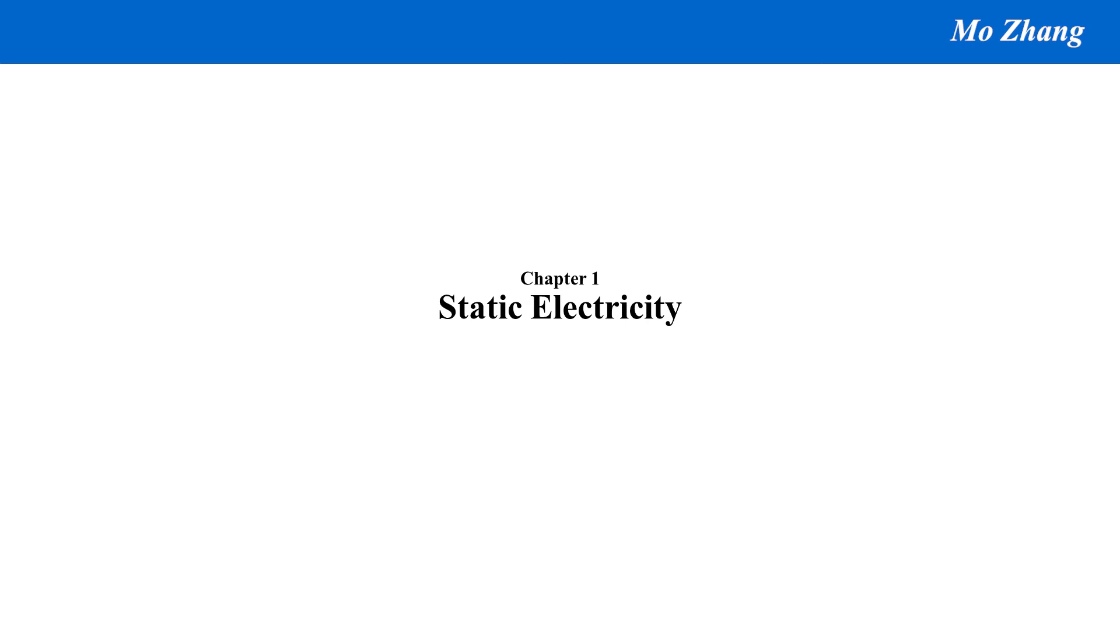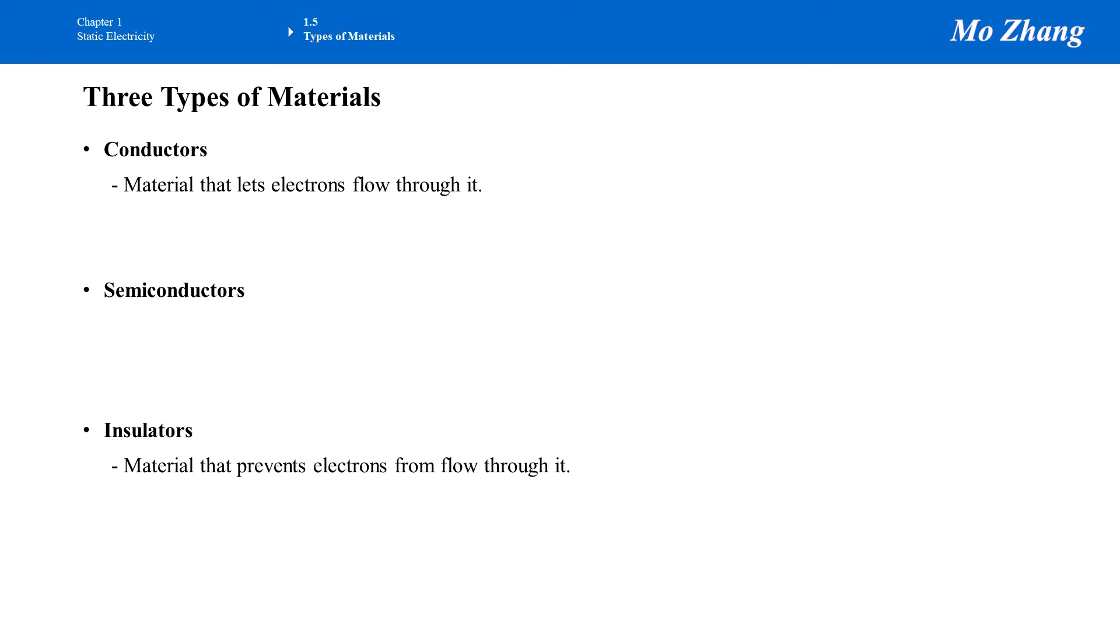Next one is the insulators. For insulators, it's material that prevents electrons from flowing through it. Electrons cannot go to the body of it, cannot go inside the body of it. It only can stay on the surface of it. If there's no force to push it forward or attract it, it will just stay on the surface.